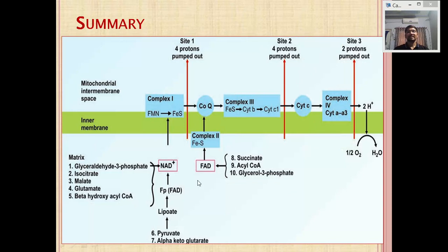Summary: The electron transport chain consists of Complexes 1, 2, 3, and 4 with two mobile carriers — coenzyme Q and cytochrome C. The proton gradient is generated as electrons pass through the ETC complexes. This proton gradient is utilized by Complex 5 (ATP synthase, F0/F1) for the synthesis of ATP. That is all about the electron transport chain and oxidative phosphorylation.